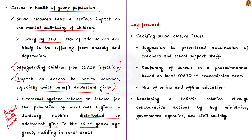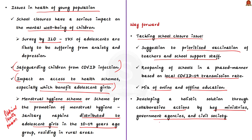To solve these issues, since school closures have affected the lives and mental health of children, the author suggests prioritized vaccination of teachers and school support staff, along with reopening of schools in a phased manner based on local COVID-19 transmission rates. A mix of online and offline education is another suggestion. The second suggestion is a holistic solution through collaborative actions by key ministries, government agencies, and civil society — an approach that has proven successful earlier. In this topic, we saw about demographic dividend, health and well-being issues of adolescent children especially adolescent girls, and solutions to these problems.